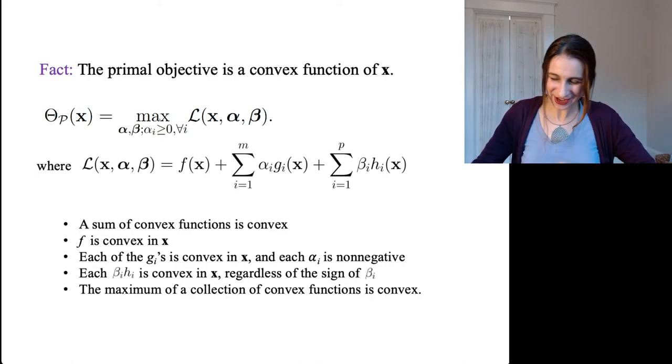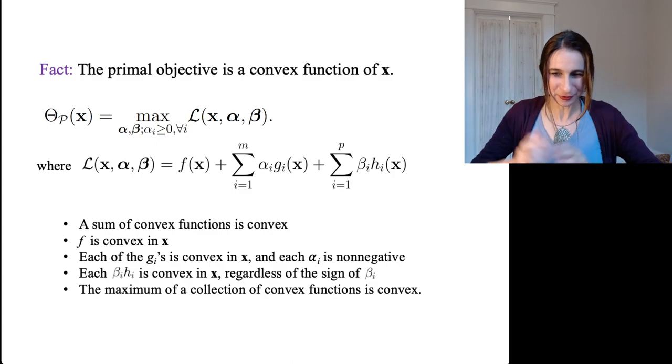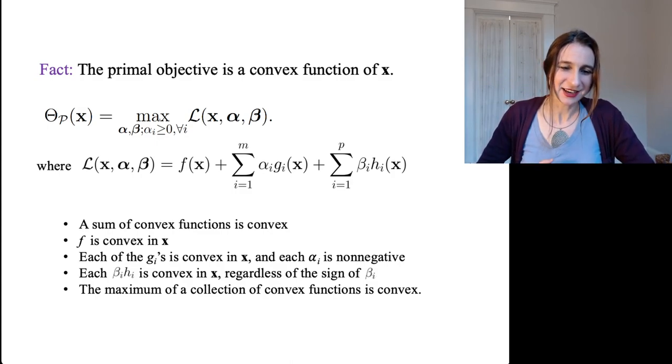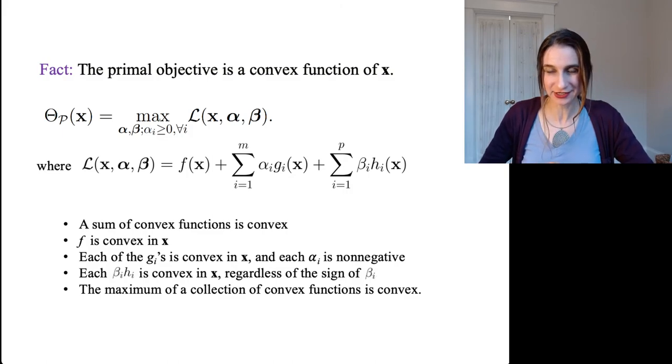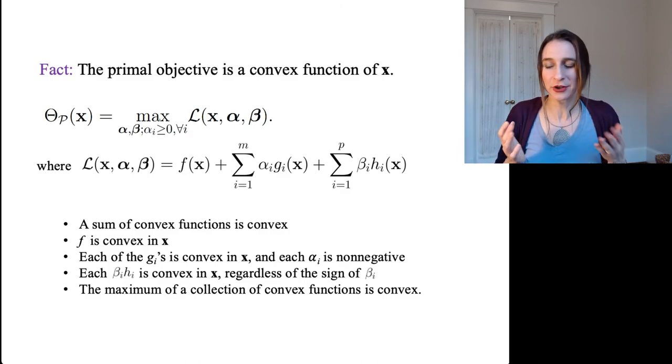So that's good. And then finally, the very last fact, very last bit you need to know to prove the fact is that the maximum of a collection of convex functions is also convex. So when we take this max over all alpha and beta,